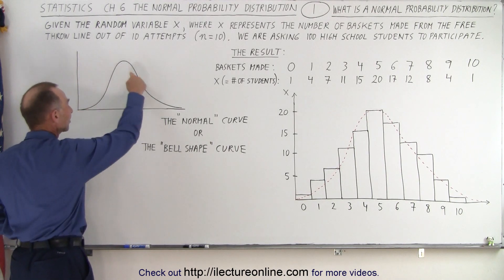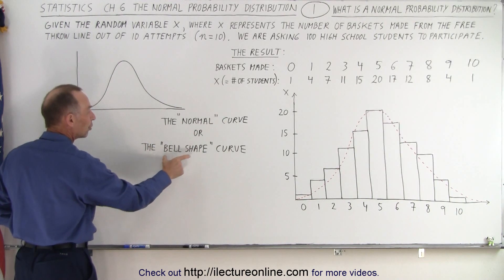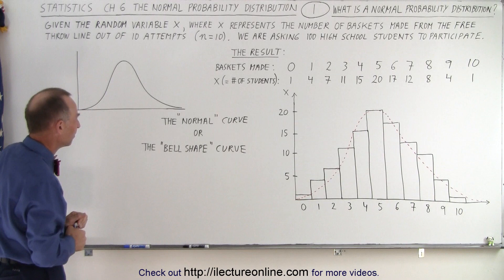notice that it has kind of an interesting curve to it. It's called the Normal Curve or the Bell-shaped curve. It essentially kind of looks like a bell shape, so that's where that term comes from.